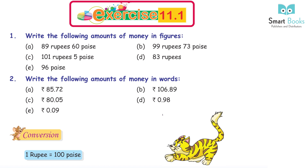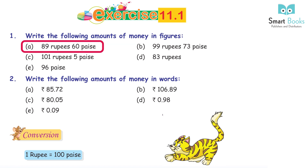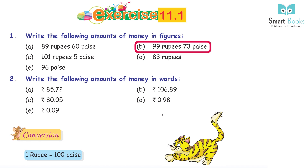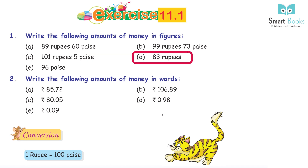Exercise 11.1, Question 1: write the following amounts of money in figures. a. 89 rupees 60 paise = Rs. 89.60. b. 99 rupees 73 paise = Rs. 99.73. c. 101 rupees 5 paise = Rs. 101.05. d. 83 rupees = Rs. 83. e. 96 paise = Rs. 0.96.